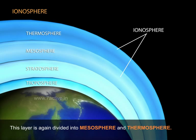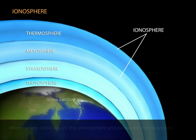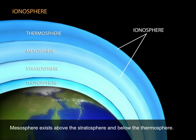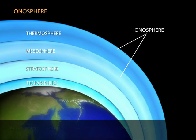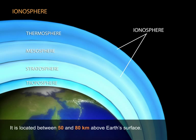This layer is again divided into mesosphere and thermosphere. Mesosphere exists above the stratosphere and below the thermosphere. It is located between 50 and 80 km above the Earth's surface.